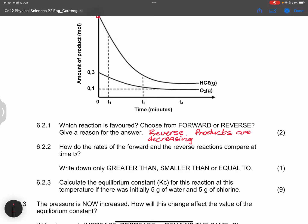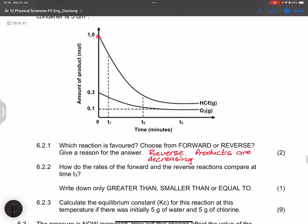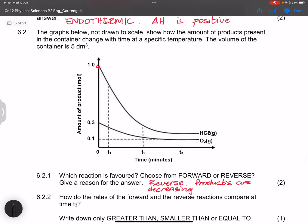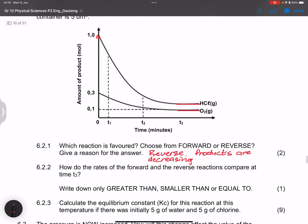Now they say how do the rates of the forward reaction and reverse reaction compare at T3. So if we look at T3 there, the graphs are actually parallel to each other. So this does suggest that we've reached a state of dynamic equilibrium. So we can say that they are equal. They said write down only greater than, smaller than, or equal to, so it would definitely be equal to.